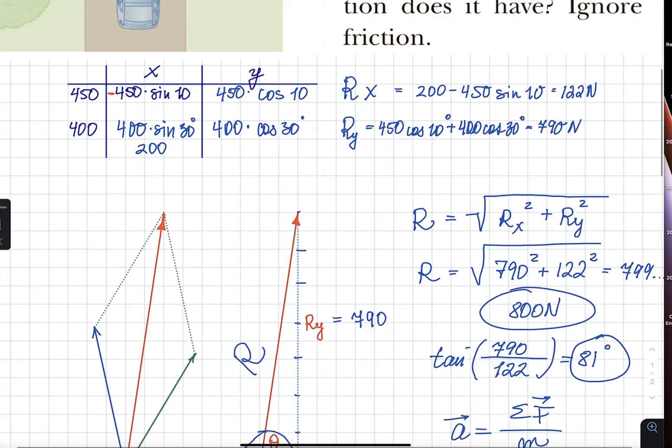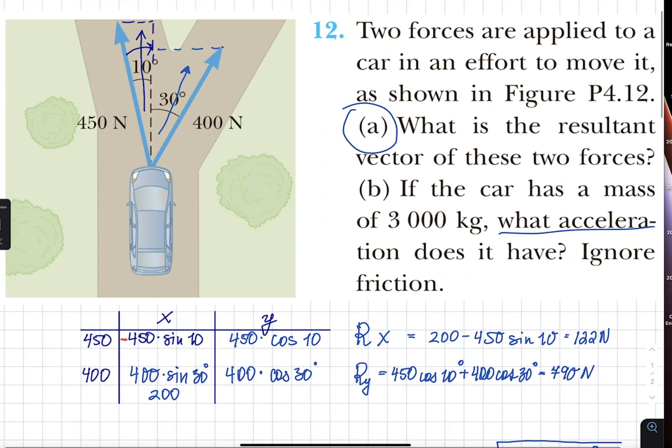That's it for question number 12, where we're given two forces asked to figure out the net force on the car and the acceleration that the car has due to those two forces. Every other force can be ignored. Friction is negligible, and gravity and normal force counteract each other and give us zero net force. So, the only unbalanced forces in this example are 450 newtons and 400 newtons applied at different angles. That is why we had to split them into two components.